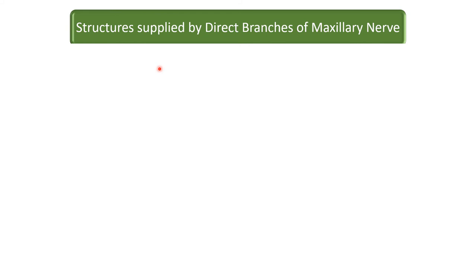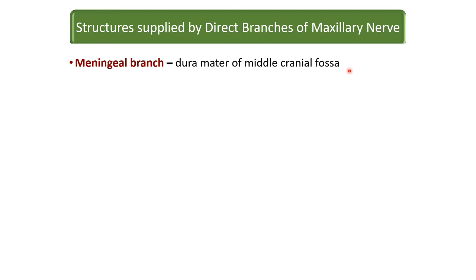Let us look at the structures supplied by the direct branches of the maxillary nerve — not including those distributed via the pterygopalatine ganglion, which include orbital, nasal, palatine, and pharyngeal branches. Of the direct branches: the meningeal branch supplies the dura mater of the middle cranial fossa, which is obvious since the nerve itself is present in the middle cranial fossa before leaving the cranial cavity.